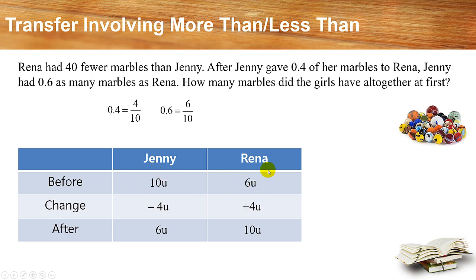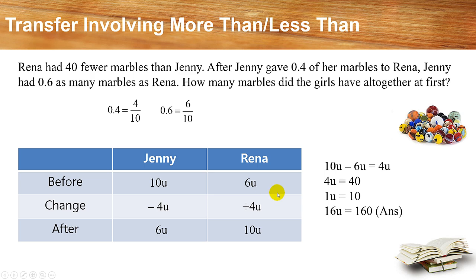So the starting units are 10 for Jennie and 6 for Rina. Since Rina had 40 fewer marbles than Jennie at first, we find the difference, which is 4 units. So 4 units equals 40 marbles, meaning 1 unit equals 10. To find the total marbles the girls had altogether, 10 plus 6 is 16, and 16 times 10 gives the answer of 160 marbles. When you see questions involving before, change, and after, you can always draw a table to help organize the information.